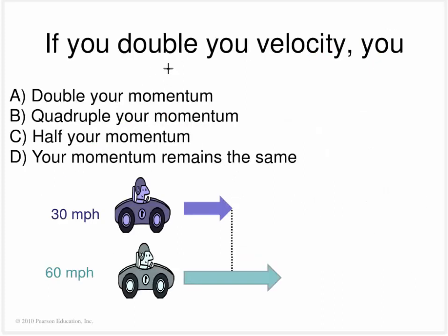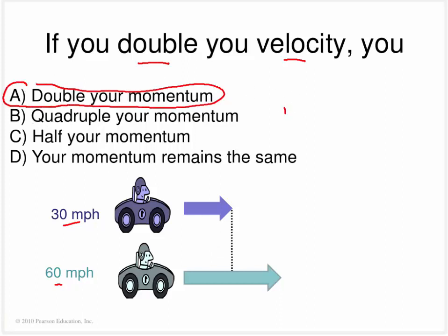If you double your velocity — say going from 30 to 60 — you would expect to double your momentum, simply because momentum equals mass multiplied by velocity. If we double the velocity, we expect the momentum to double as well.